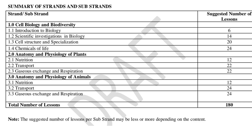The second strand is anatomy and physiology of plants, broken into three substrands: nutrition, transport, and gaseous exchange and respiration. The last strand is anatomy and physiology of animals, also covering three substrands: nutrition, transport, and gaseous exchange and respiration — this time in animals. The total for biology is 180 lessons per calendar year.